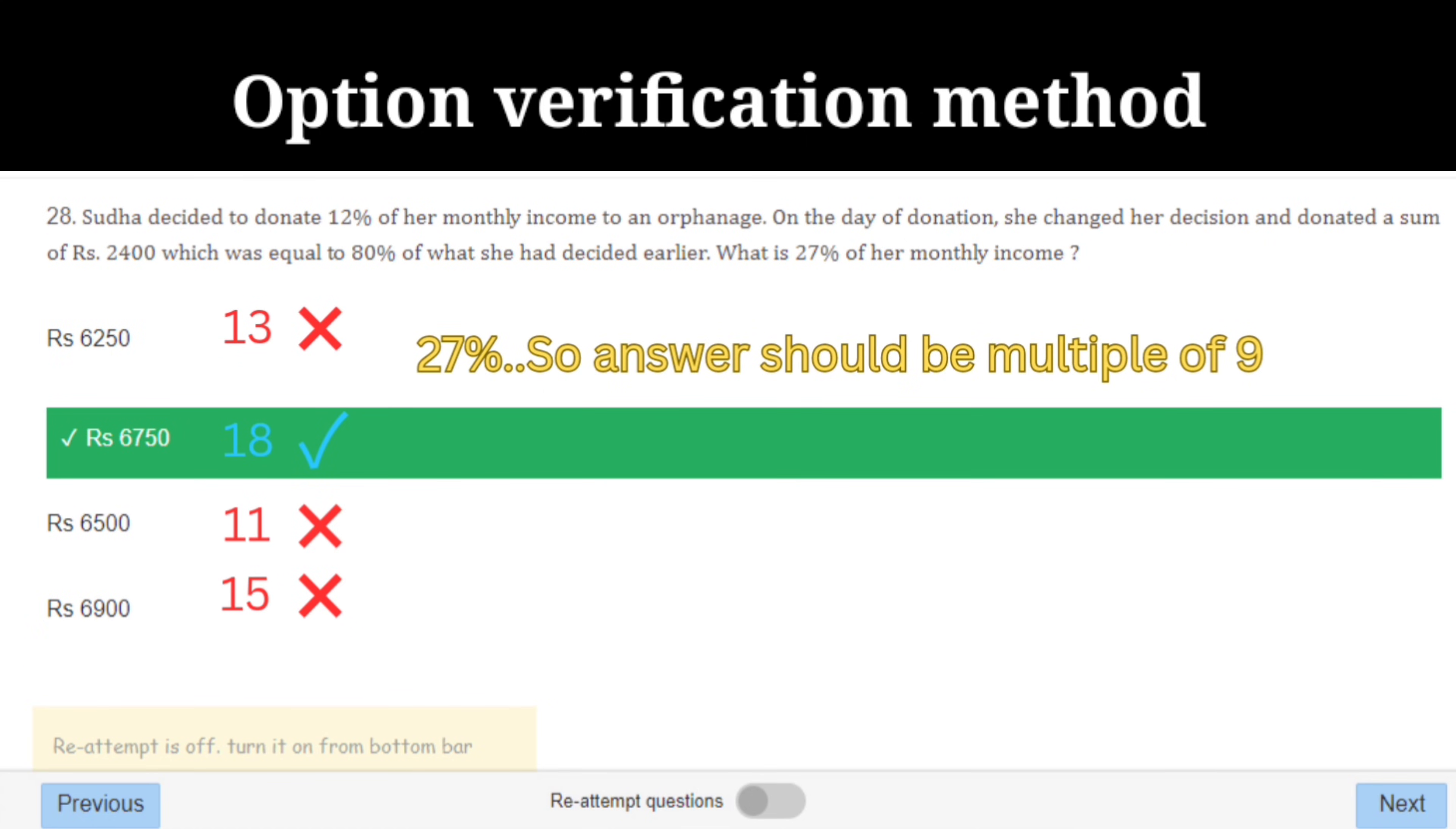What is 27 percent of her monthly income? 27 percent, which means answer should be a multiple of nine. Just verify 9 multiple in the options.